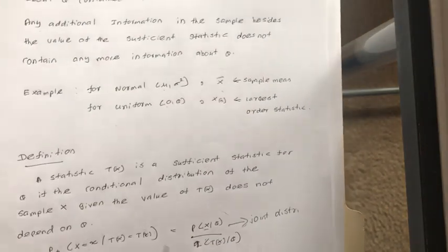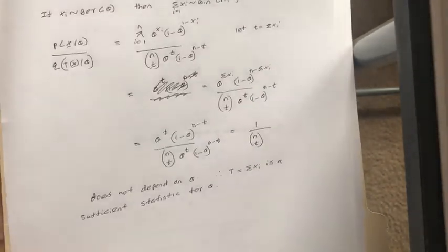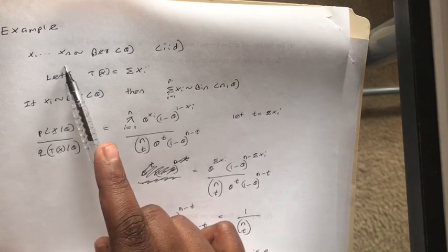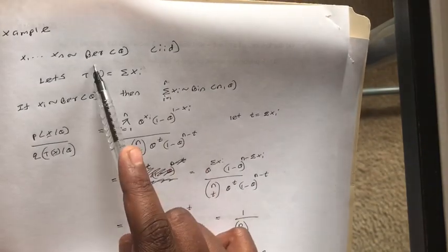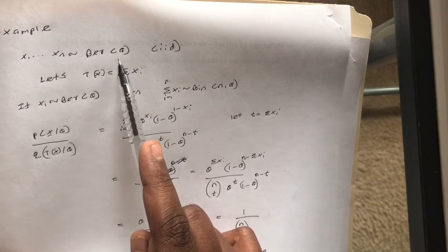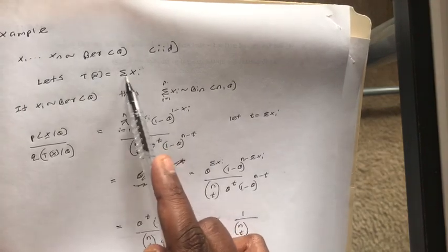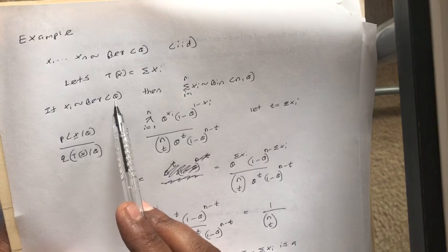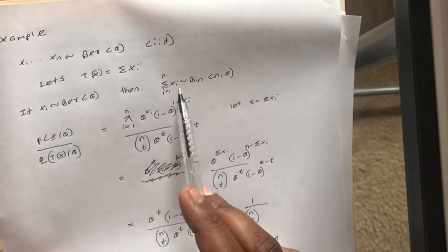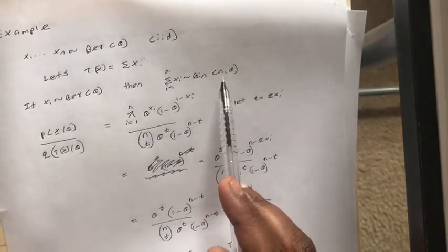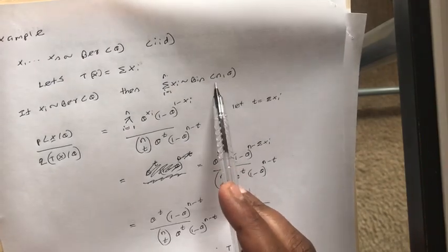Let us do some examples. First, we are going to consider when the data is Bernoulli distributed. Let's say you have N observations which are IID and Bernoulli distributed with parameter theta, and we assume T(X) is the sum of X_i — the summation of all X values. We know that if X is Bernoulli distributed with parameter theta, then the summation of N observations follows a binomial distribution with parameters N and theta.